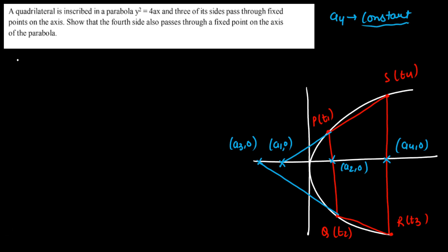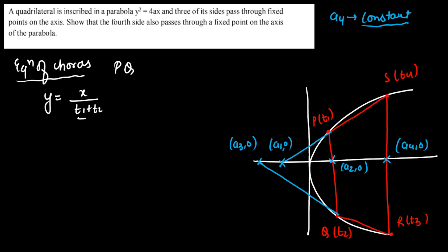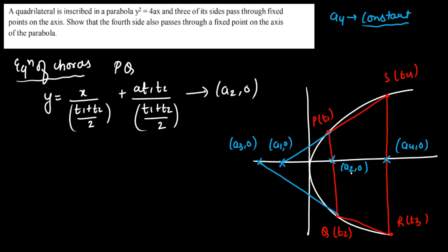Now let's write the equation of the chords — the sides of the quadrilateral. The equation of chord PQ is: y = (2/(t1 + t2))·x + a·t1·t2·(2/(t1 + t2)). Since PQ passes through the fixed point (a2, 0), substituting gives us t1·t2 = -a2/a. This is the condition for chord PQ passing through the fixed point (a2, 0).